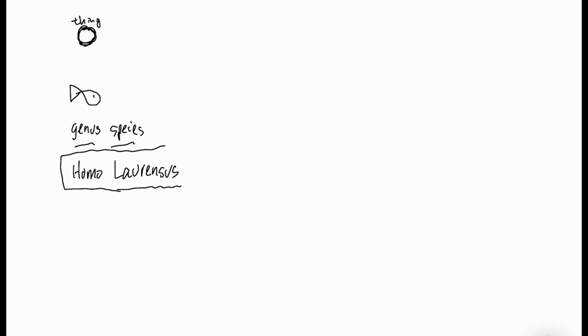Now we have a new species, a new thing called Homo laurensis, which is this little fish right here. So you use the thing move to distinguish new things — things that haven't previously been distinguished by somebody before.